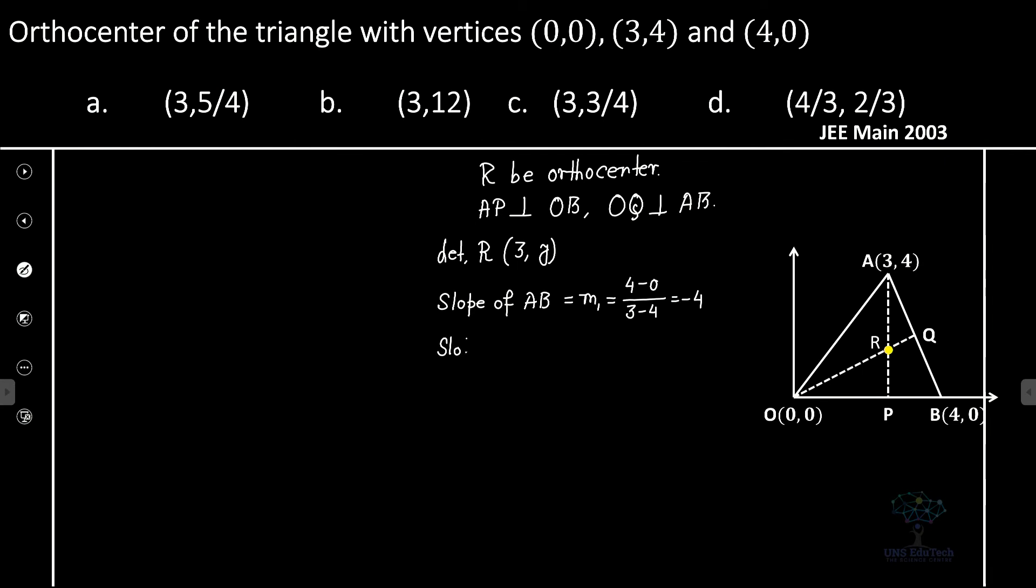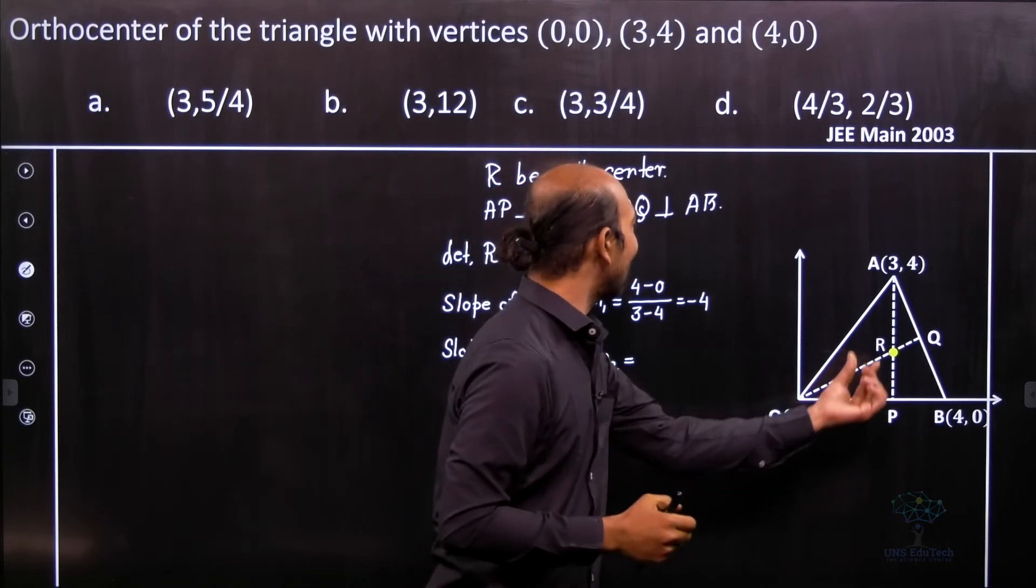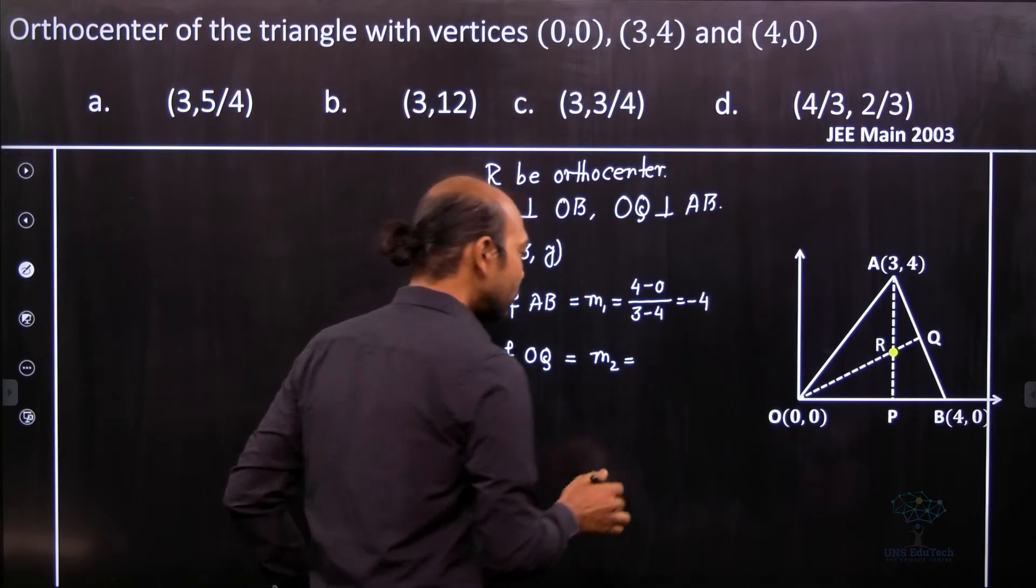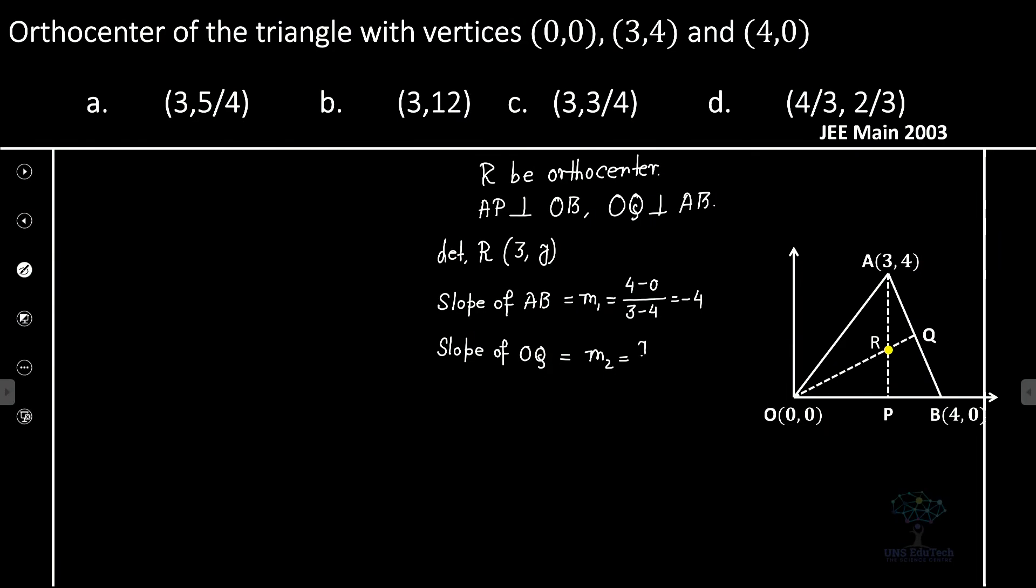Now let us calculate the slope of OQ. So let us consider it's M2. So what is the slope? It's a slope passing through the origin and the point 3 and y. So what's that? Y by 3. So it's y minus 0 divided by 3 minus 0. So in other form it is y by 3. That's it.